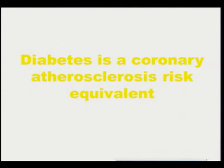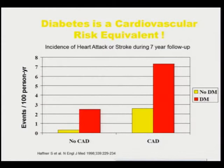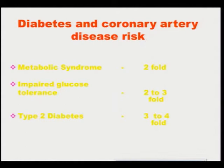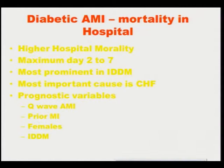Diabetes is considered as a coronary atherosclerosis risk equivalent. The risk of a future event is practically the same for a diabetic without coronary artery disease and a person who has established coronary artery disease. The atherosclerotic process begins in high-risk patients even before diabetes becomes established. Diabetes and coronary artery risk increases two-fold with metabolic syndrome, two-to-three-fold with impaired glucose tolerance, and three-to-four-fold when type 2 diabetes is established. They have higher hospital mortality, especially in females with extensive Q-wave myocardial infarction and those who are insulin-dependent diabetics.